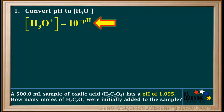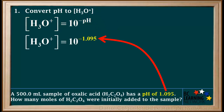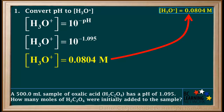We'll start the process by converting the given pH to hydronium ion concentration. We use the equation: hydronium concentration equals 10 to the negative pH, which is 10 to the negative 1.095. This works out to 0.0804 molar. So the hydronium ion concentration is 0.0804 molar, and we'll make a note of it up here.